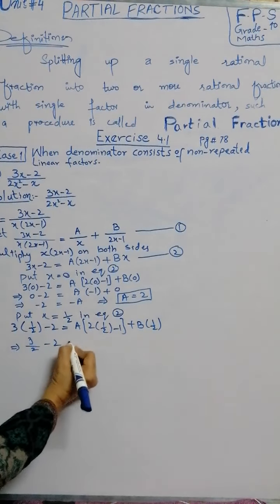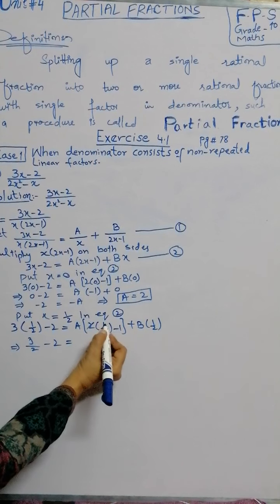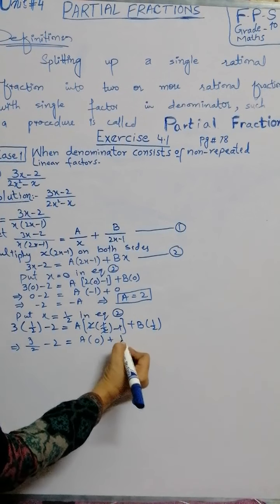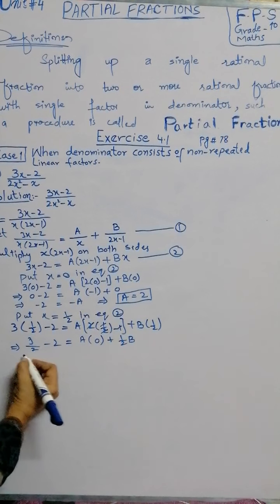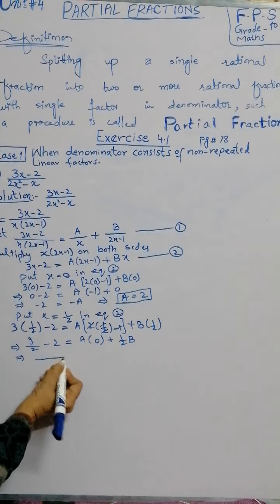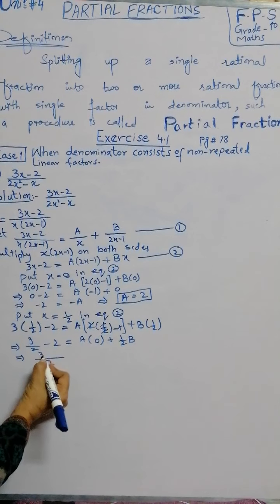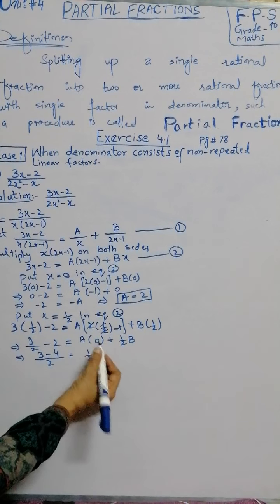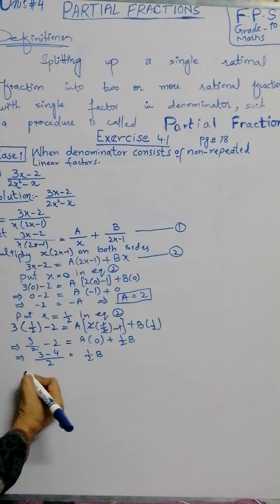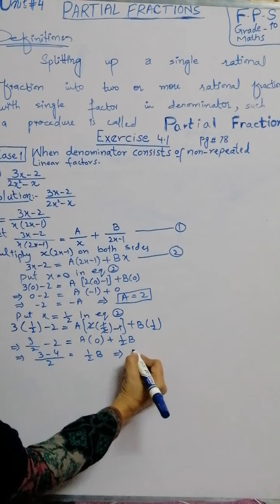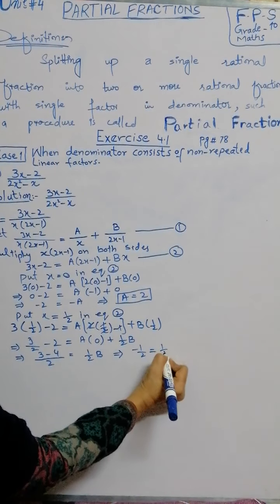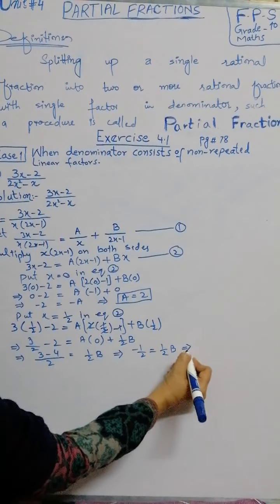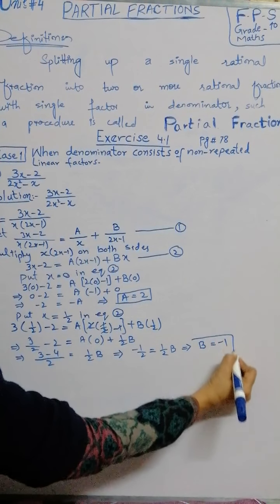Simplifying: 3 by 2, this 2 and 2 cancel, 1 minus 1, the bracket becomes 0, plus B times 1 by 2. Taking LCM, the LCM is 2, we get 3 minus 4 equals 1 by 2 B. This implies minus 1 by 2 equals 1 by 2 B.